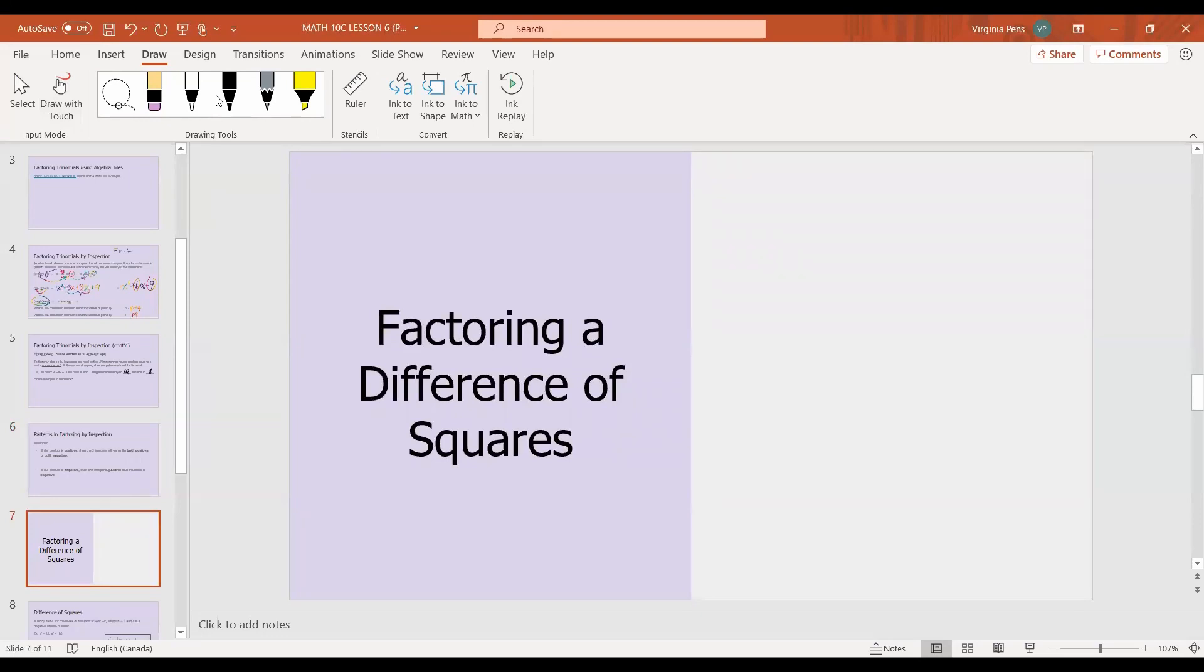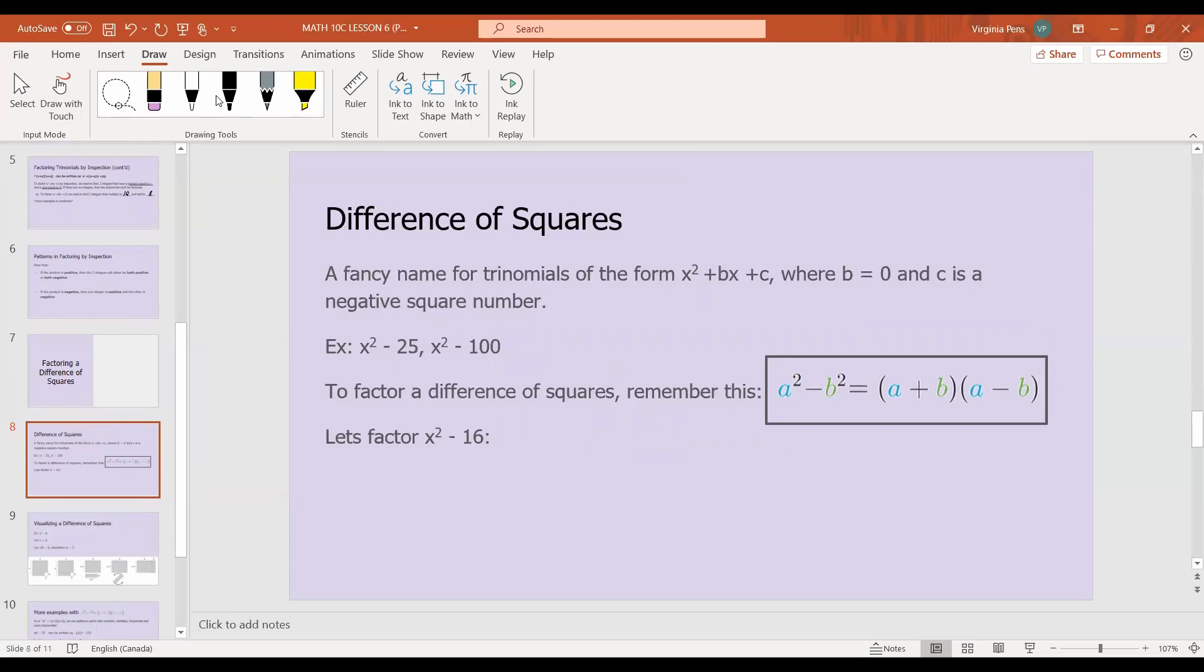But let's kind of take a look at difference of squares for now. So a difference of squares, it's basically like a fancy name for trinomials of the form x squared plus bx plus c, where b is equal to zero. So this middle value is just cancelled out, b is just won't be here. And c is a negative square number. Note that it says negative, because you can't have a positive difference of squares. And we're going to talk about that in a moment. So some examples would include x squared minus 25. So 25 is a negative square, right? It's the square of 5. And 100 is the square of 10. So these both are difference of squares, and we're going to learn how to factor them in the next slide.